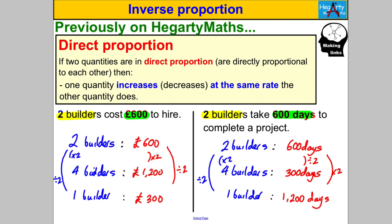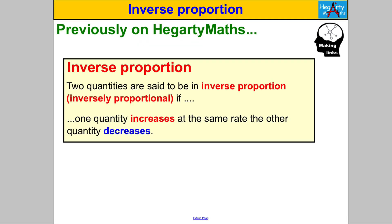That scenario is a typical example of two quantities — your number of builders and your number of days — that are inversely proportional to each other. So what is inverse proportion? Two quantities are said to be in inverse proportion, or inversely proportional, if one quantity increases at the same rate the other decreases. So if one quantity doubled, the other would halve. If one quantity increased by seven, the other would be divided by seven. And if one quantity was divided by three, the other would increase by three.